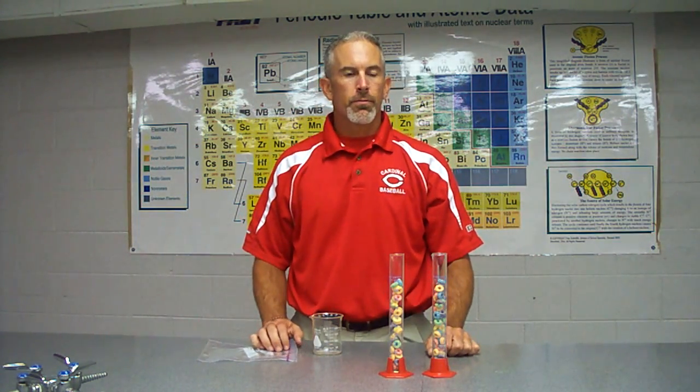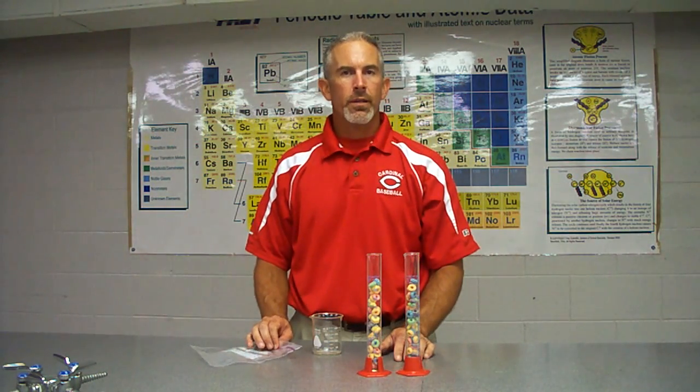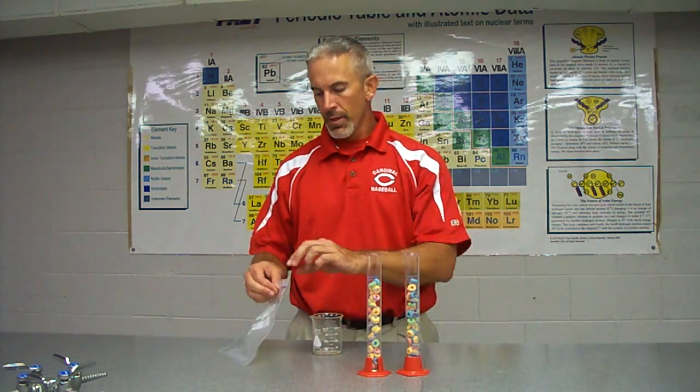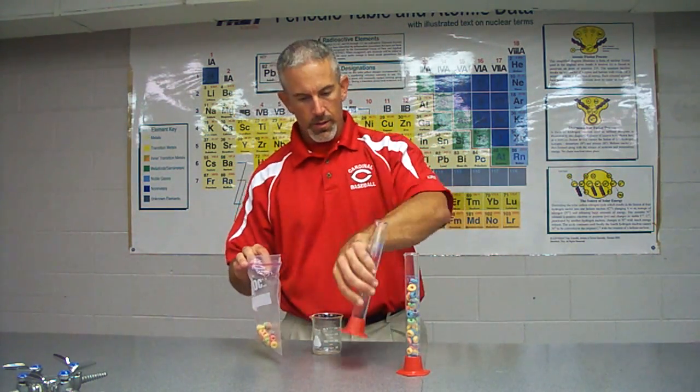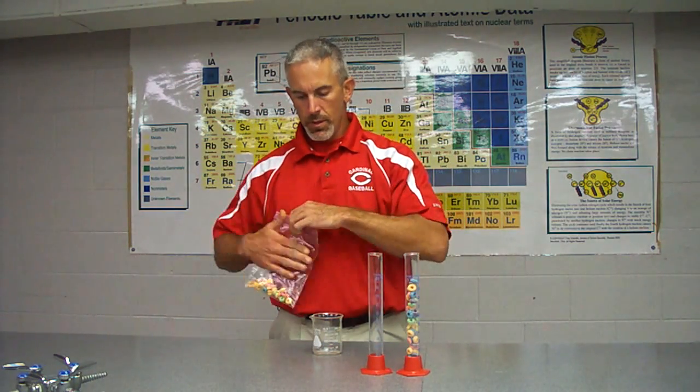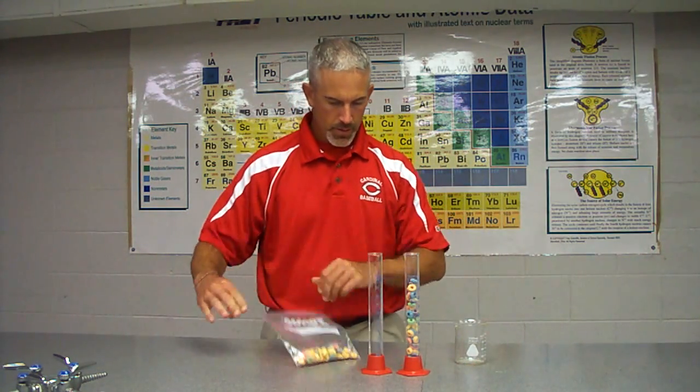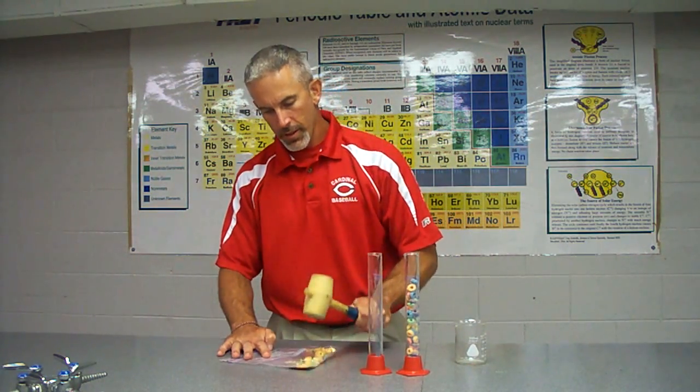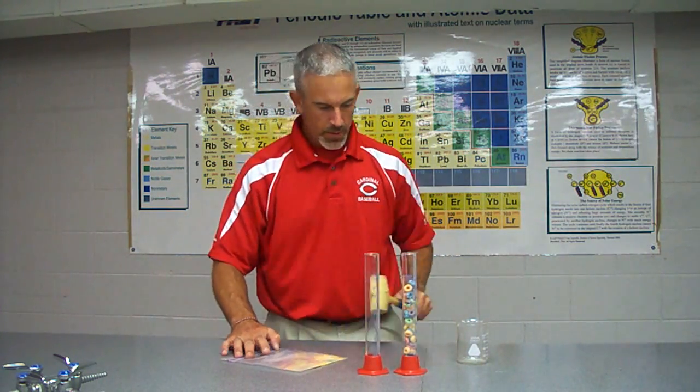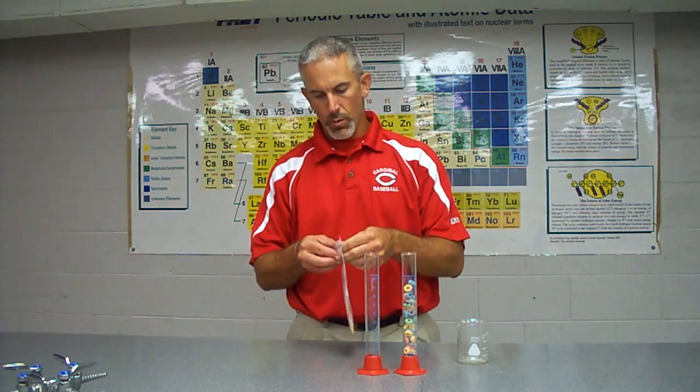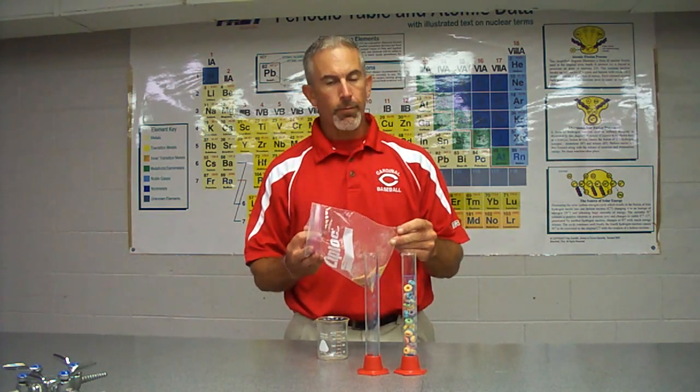You can also think of density as how compact a substance is. Here we have two samples of Froot Loops cereal, both of equal volume. So we're going to predict that they have equal mass. I'm going to take one sample of our Froot Loops and put them into a baggie and then create a slight change. So before we did this, we could say that they had equal mass, equal volume, therefore equal density.